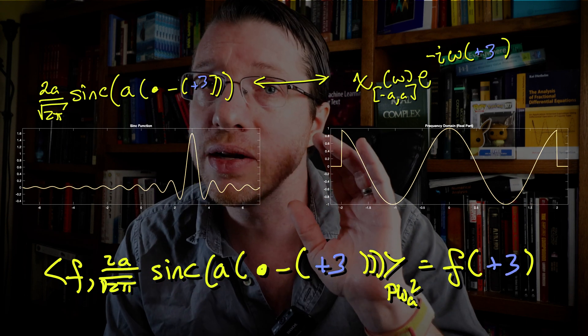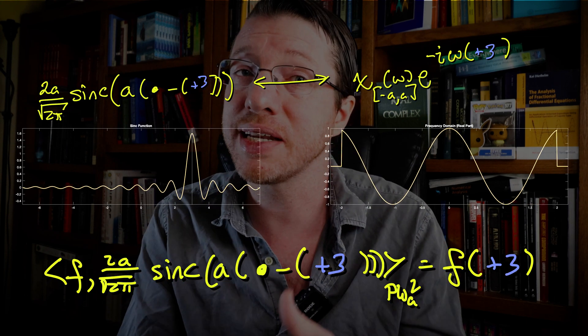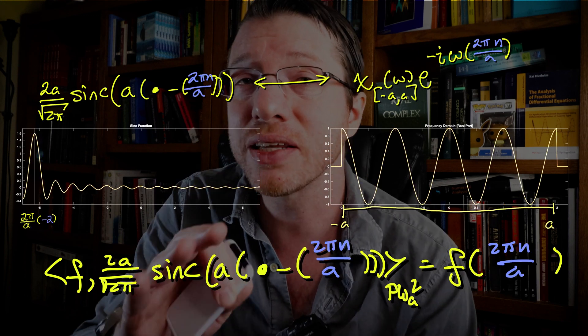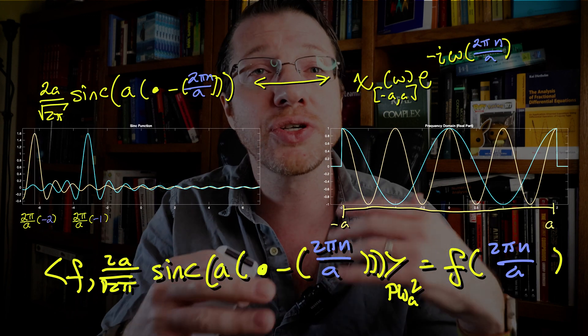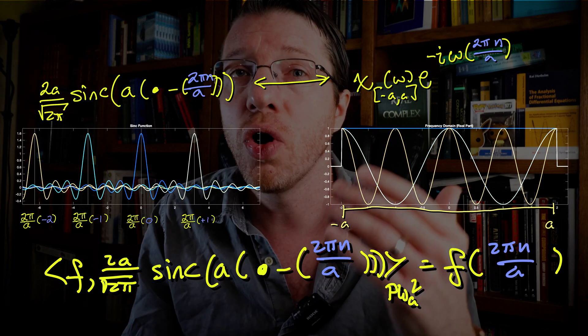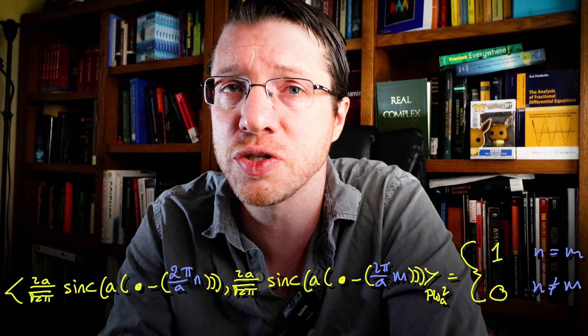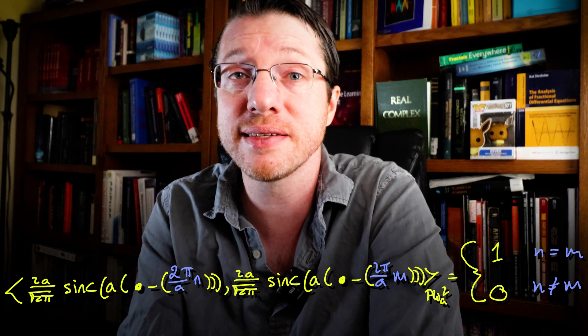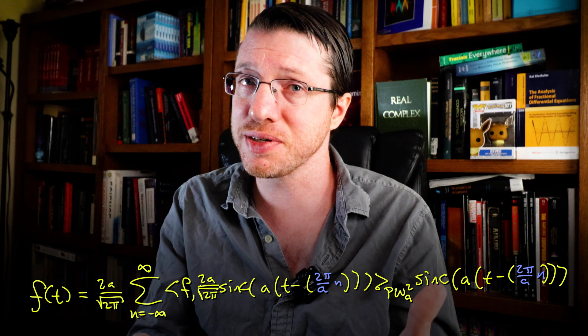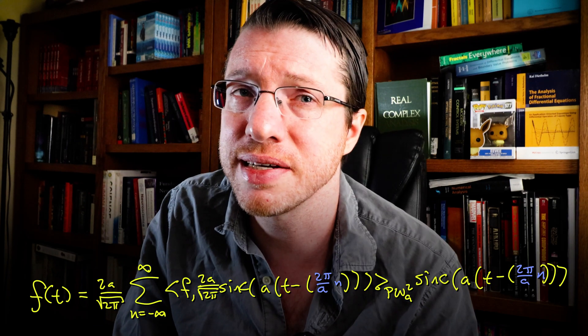Now, we know from classical Fourier series that if we select some particular exponents, the corresponding exponentials are actually an orthonormal basis over L2 of this interval. Correspondingly, these shifted sync functions form an orthonormal basis for the Paley-Wiener space, and every function in the space can be expanded like this, with these inner products here.